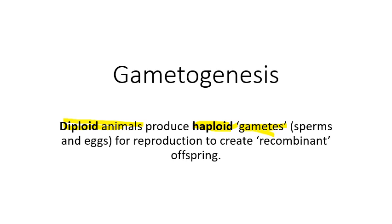Sexual reproduction is why we've had such an explosion of new species on Earth. During the first two billion years of life, bacteria and protists reproduced mostly through binary fission and evolution was very slow. But in the last 300 million years, we've had an explosion of different types of organisms, all arising from sexual reproduction and offspring that are slightly different from their parents.